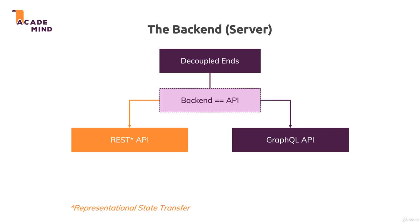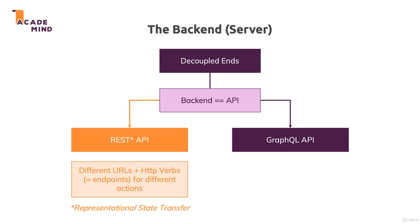They work differently when it comes to how requests are received or how requests sent to the API should be formatted. A REST API, which is by far the most common and used form of backend web API, uses a combination of different URLs or paths — which are the things after the domain — and HTTP verbs, which is the GET, POST, PATCH, DELETE thing you might have heard of, to build so-called endpoints which trigger different actions. For a REST API, it's the combination of the URL and the verb used for the request that defines what happens on the server. When we build such a REST API, we define the combinations of URLs and verbs we want to support, and for unsupported combinations, an error will be sent back if a client tries to use it.